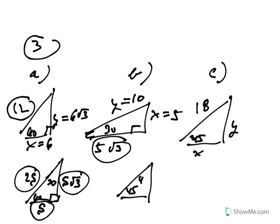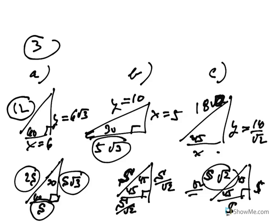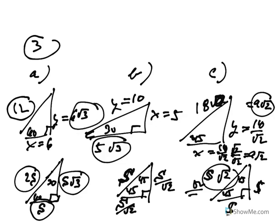For the 45-45-90 triangle, the ratio is s, s, s√2 — the two legs are equal and the hypotenuse is s√2. If the hypotenuse was 18√2, the legs would both be 18. Since it wasn't, you write 18 ÷ √2. To rationalize the denominator, multiply by √2 ÷ √2 to get 9√2. These questions ask for exact answers, so you need radicals rather than decimal approximations.